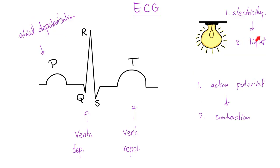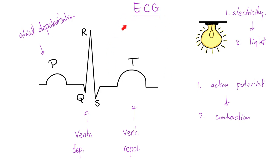Remember: who comes first, the electricity or the light? Electrical current flows first, then the filament converts electrical energy into light. The same happens in the heart — depolarization comes first, followed by muscle contraction. Atrial depolarization occurs first, followed by atrial muscle contraction. Then ventricular depolarization occurs, followed by ventricular contraction. Electricity first, then contraction.